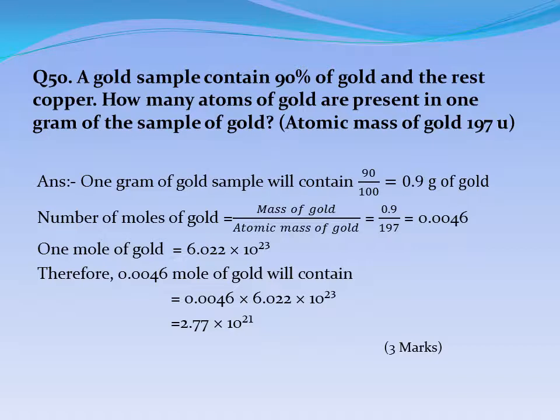Question No. 50: A gold sample contains 90% gold and the rest copper. How many atoms of gold are present in 1 gram of the sample? Atomic mass of gold = 197U. Answer: 1g of gold sample contains 90÷100 = 0.9g of gold. Number of moles of gold = 0.9 ÷ 197 = 0.00457 mol. Therefore, number of gold atoms = 0.00457 × 6.022×10²³ = 2.77×10²¹ atoms.